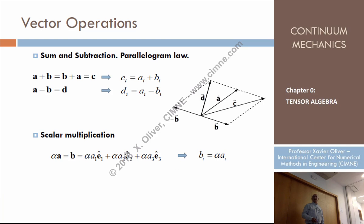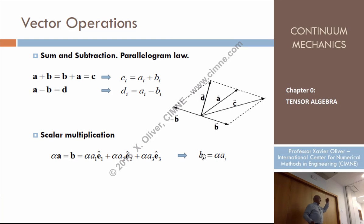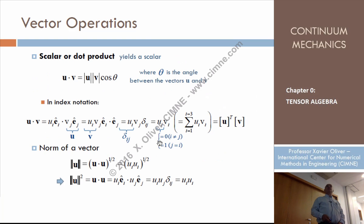That is what we call the compact equation, which expresses the full vector in terms of the basis we are using. This expression gives the same result whatever the basis is. If we change the basis, the components will change, but the result would be the same. This is the indicial expression of that, saying that in a certain basis the component i is the result. That is an equivalent expression — that is an indicial expression; that is the compact expression. We'll see that along the book.